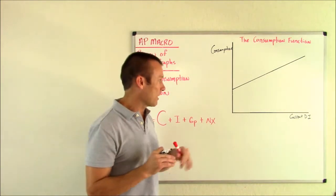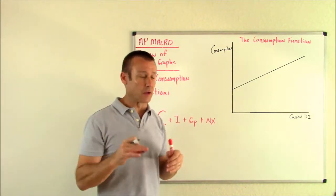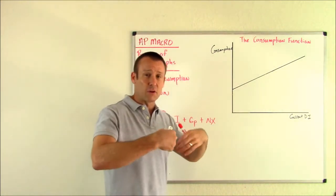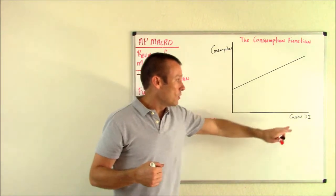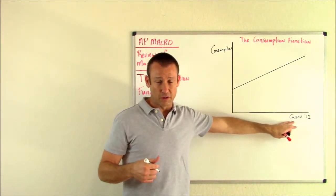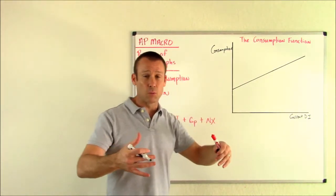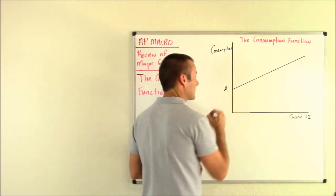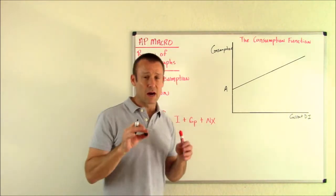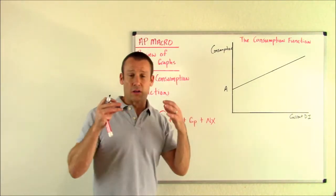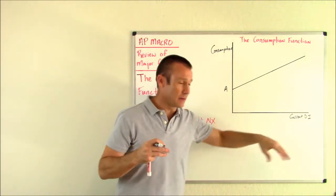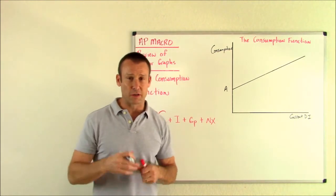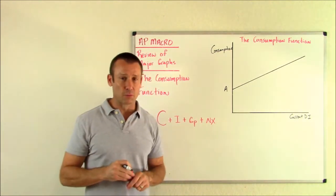The next thing that we see in this graph is this vertical intercept is positive. We're not starting at the origin of zero, which means that there is some level of consumption that we will do regardless of current disposable income. Another way to say it is even if current disposable income was zero, we would still spend money. So we call that autonomous consumption. Autonomous meaning independent. This is our level of consumption that is independent of current disposable income, not dependent upon current disposable income.